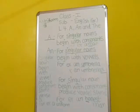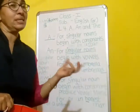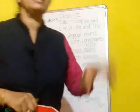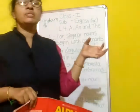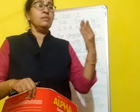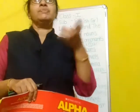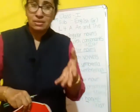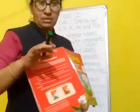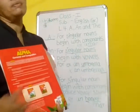In our previous period we completed the explanation of articles 'a' and 'an'. For a singular noun beginning with a consonant we use 'a', and for nouns beginning with a vowel we use 'an'. Also, if a word begins with a consonant but produces a vowel sound, we still write 'an' before it. If a word begins with a vowel but produces a consonant sound, we use 'a'.